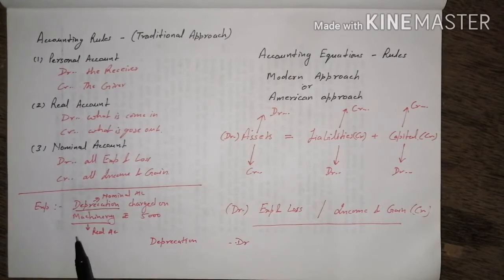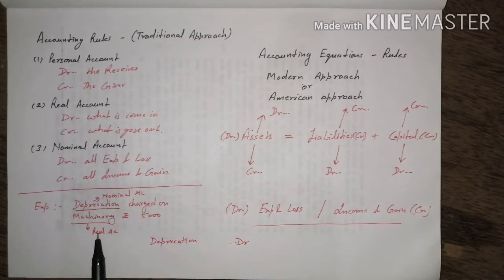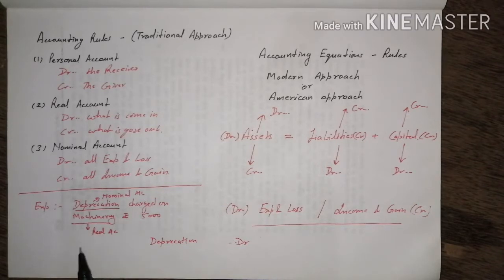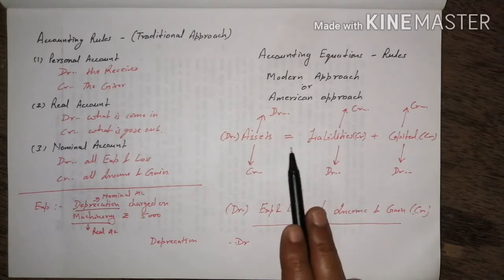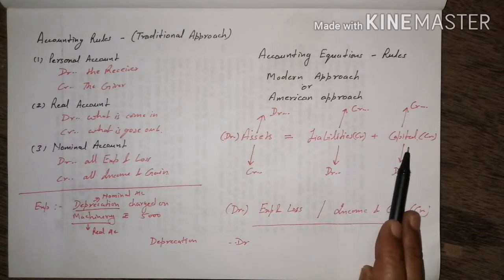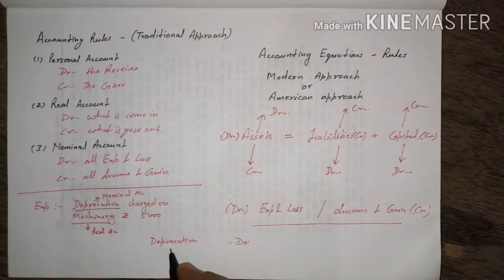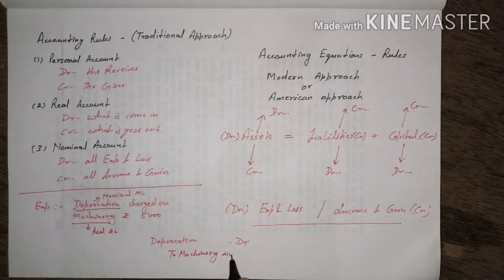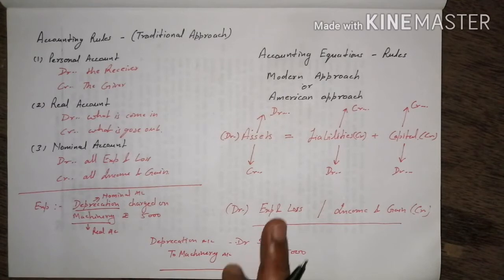Depreciation is a nominal account, so rule: all expenses and losses — debit depreciation account. Machinery is a real account; however, machinery has not gone out of the business physically. Under the American approach (Assets = Liabilities + Capital), to decrease the value of an asset we credit it. So machinery account is credited, and the entry is: Depreciation A/c Dr. 5,000 / To Machinery A/c 5,000.